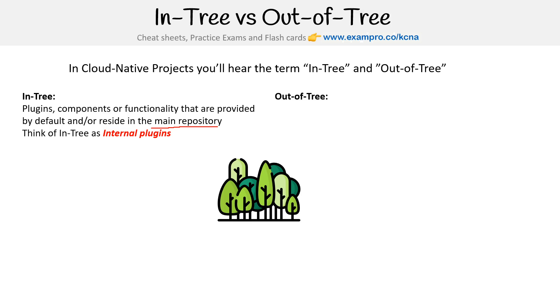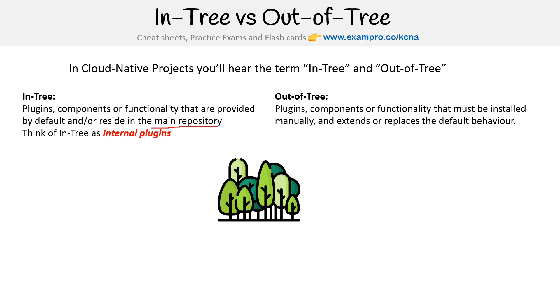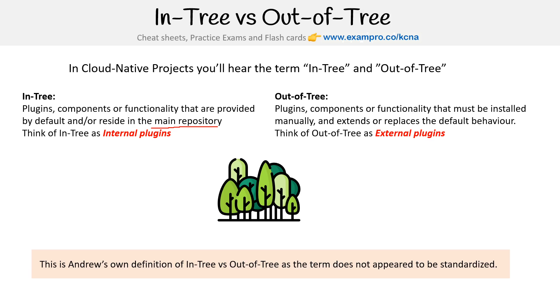Then you have out-of-tree — plugins, components, or functionality that must be installed manually and extends or replaces the default behavior. Think of out-of-tree as external plugins.